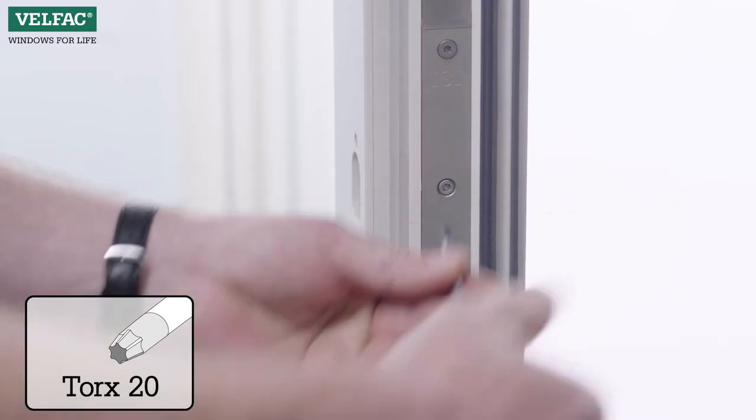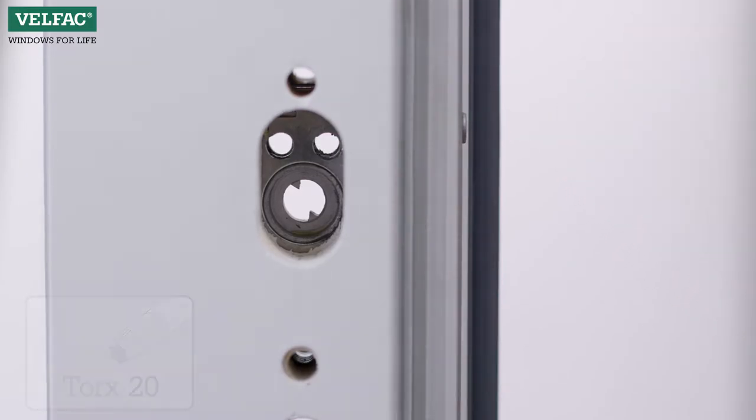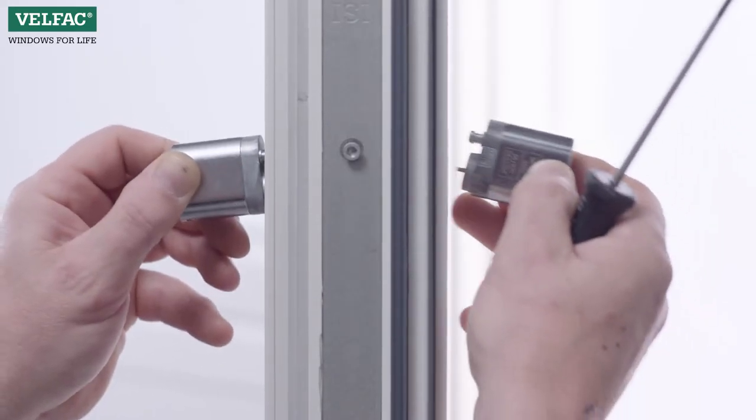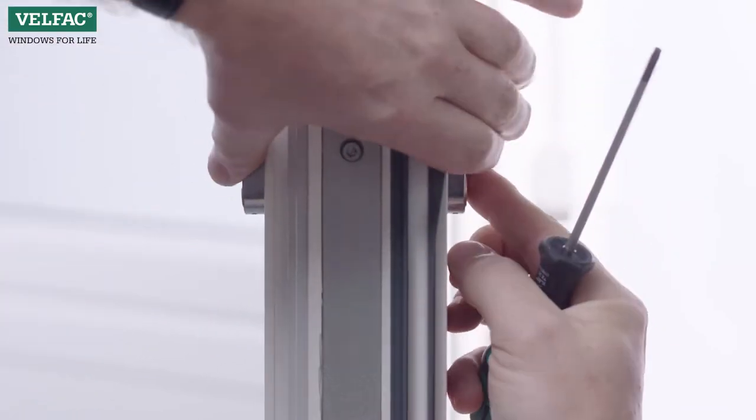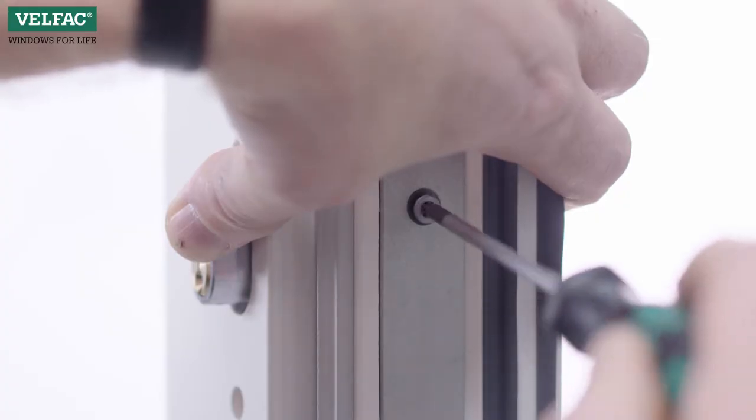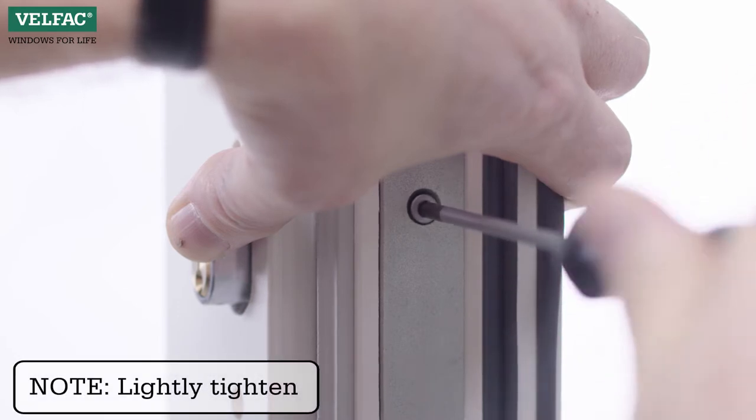This is done by tapping lightly on the screw. The cylinders are inserted into the lock case from each side of the door. They are fixed using the screw in the front of the lock case.